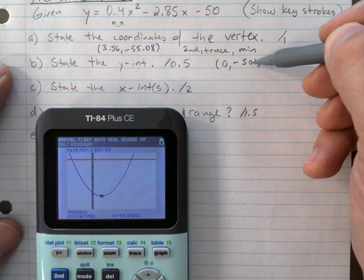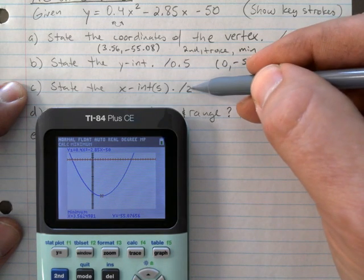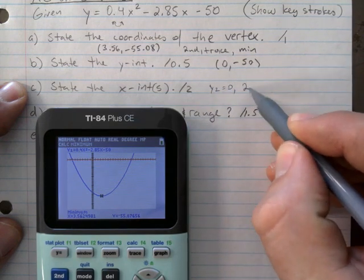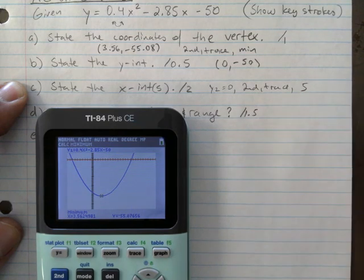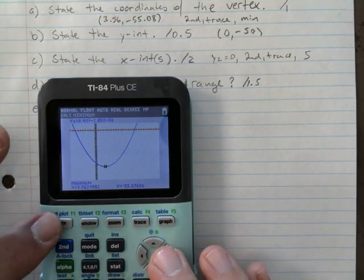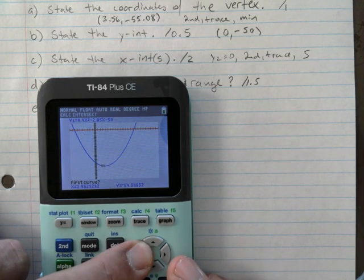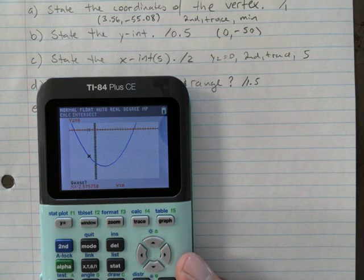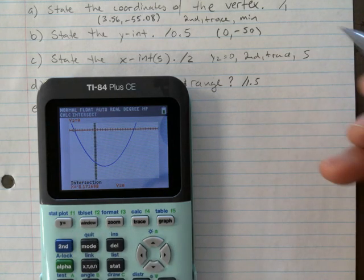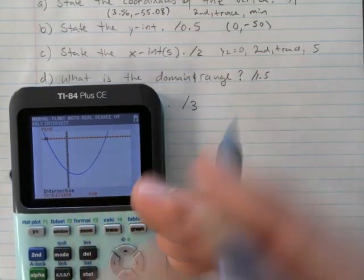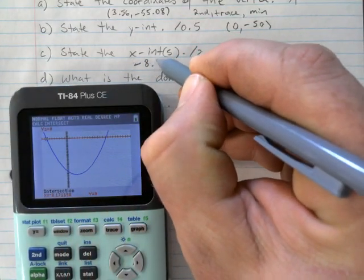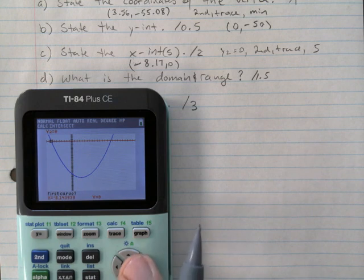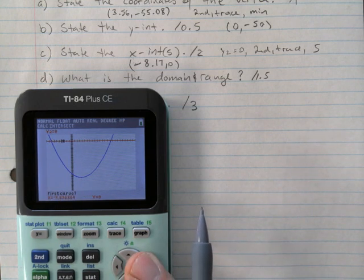X-intercepts—I'm going to say this. Y is equal to zero, and then just second, trace, 5. Okay, and so we go second, trace, 5. Go to the left—that's good enough. That's close enough, by the way. Enter, enter, enter. And so that's negative—let me see here—negative 8.17.